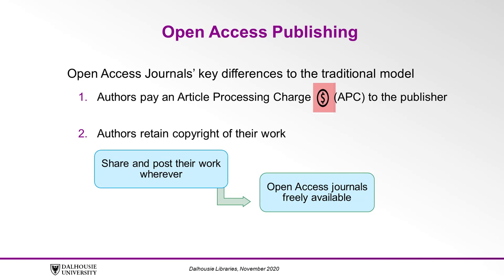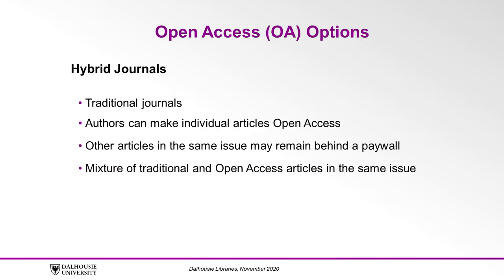Open access journals are freely available. Hybrid journals are traditional journals that allow authors to make individual articles open access, while other articles in the same issue may remain behind a paywall. In this model, traditional and open access published articles can exist side by side.